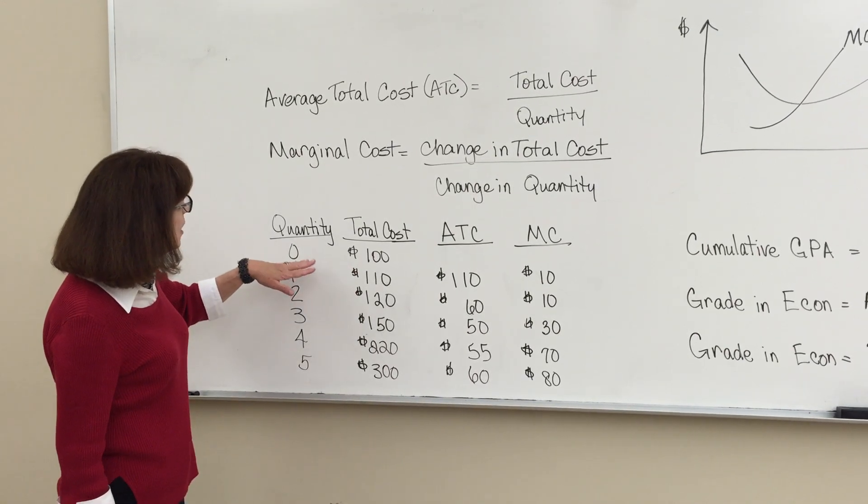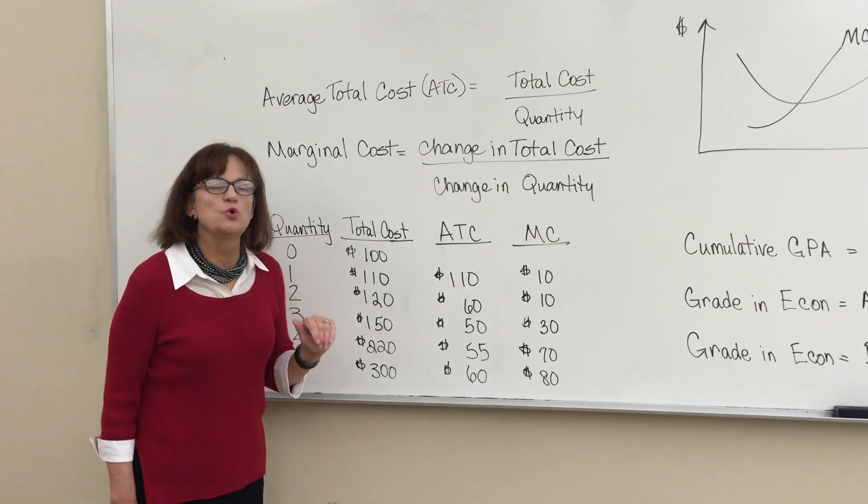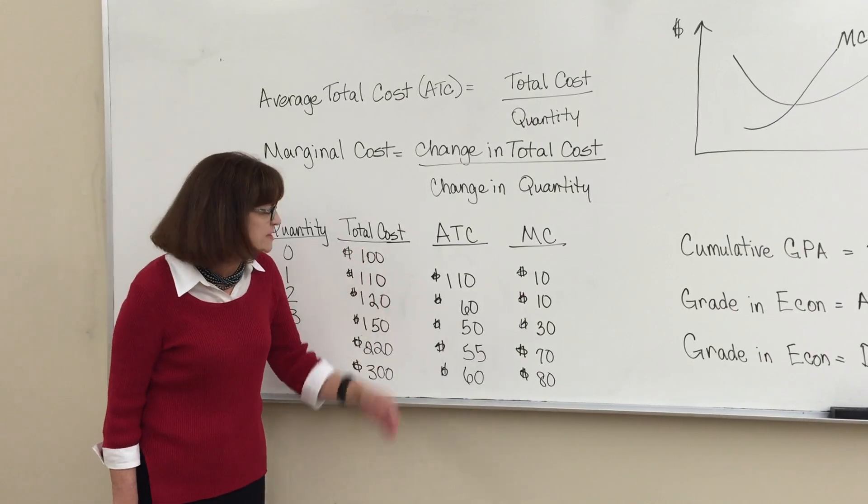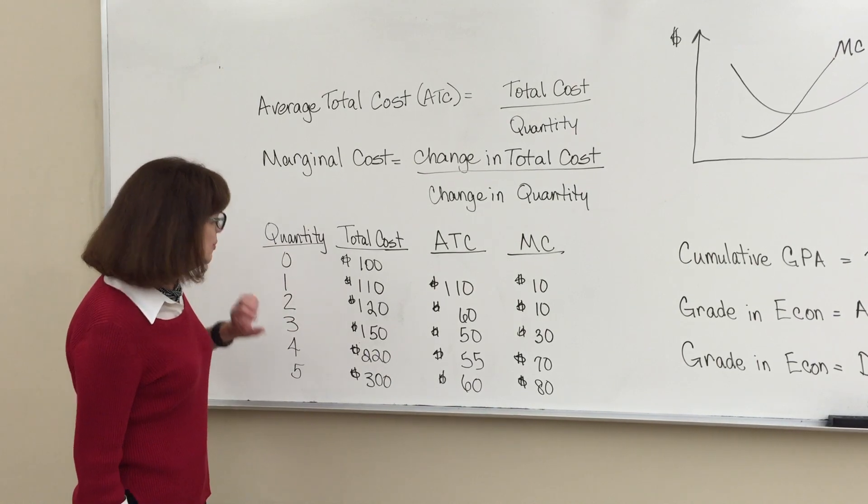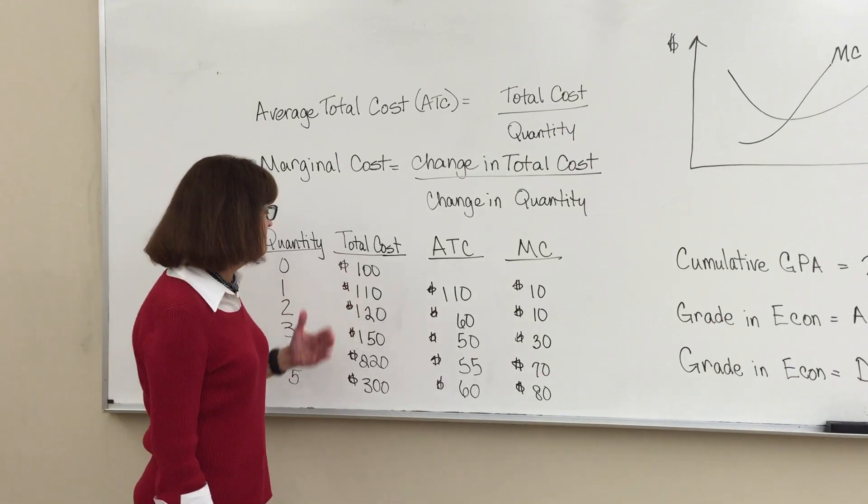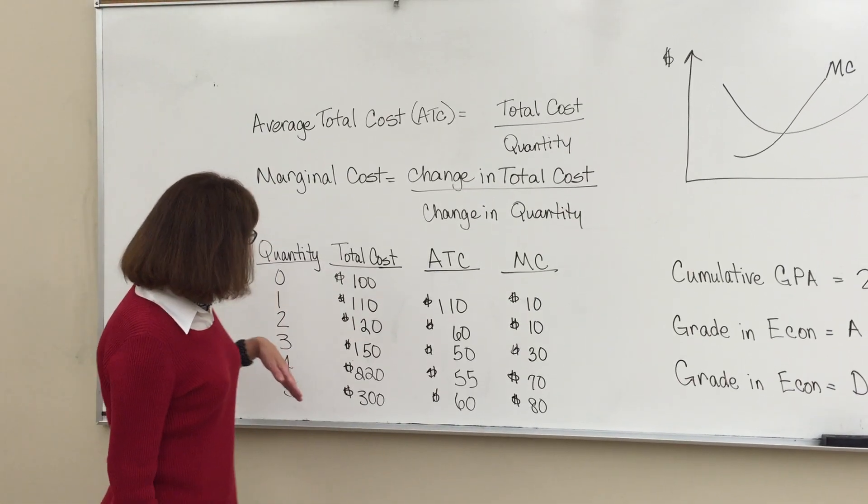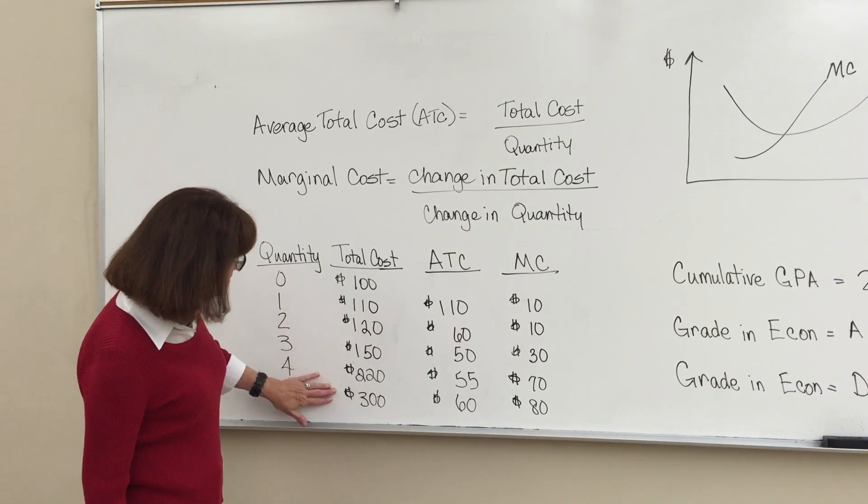If you are not producing any output, you would still have some total cost because you had to pay your mortgage or your insurance bill. But when you produce your first unit of output, your total cost would go up because you've had some variable costs like a worker. So as you add more output, your total cost increases.